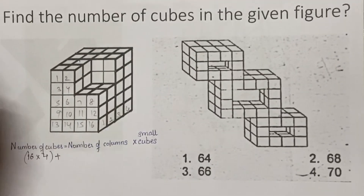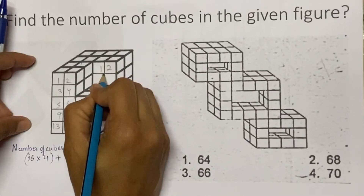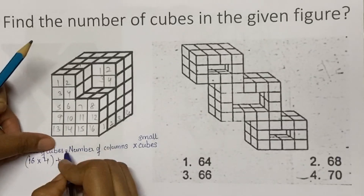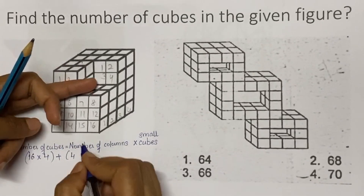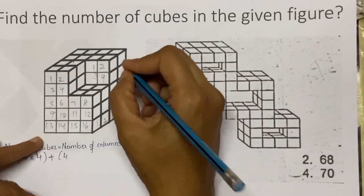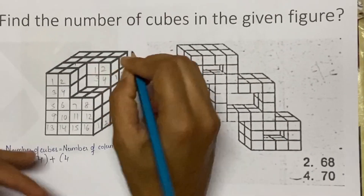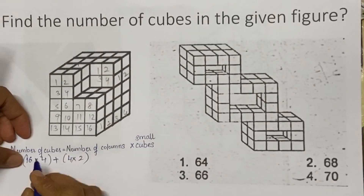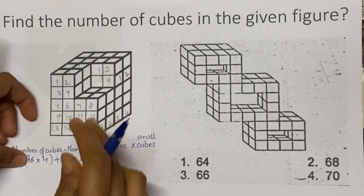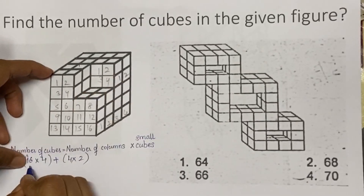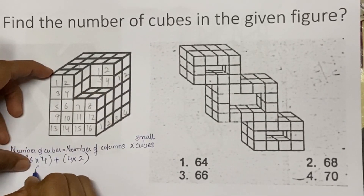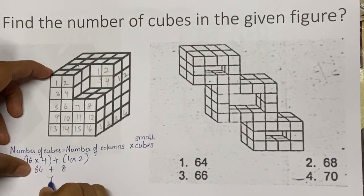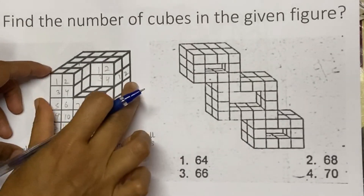Then here you can see 4 more columns, and we have to include that too — 4 columns with 2 cubes. So here the simplification will give you the number of cubes in this figure: 16 into 4 is 64, plus 4 into 2 is 8. So there are 72 cubes in this figure.